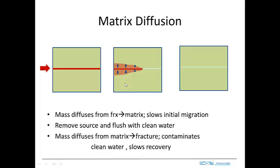As a result of that, some of the mass that is moving along the fracture, instead of moving along, it moves out into the matrix. The molecules that are in the matrix are no longer in the fracture. That causes the leading edge or the average movement of the contaminant to be delayed. Matrix diffusion retards or slows down the movement of contaminants where you have contaminants moving along the fracture into uncontaminated regions.